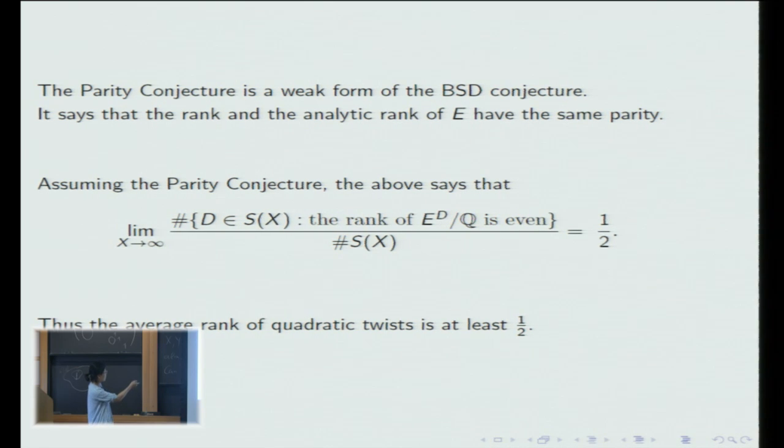Thus from this the average rank of quadratic twists is at least one half. Goldfeld conjecture predicts that it is exactly one half.